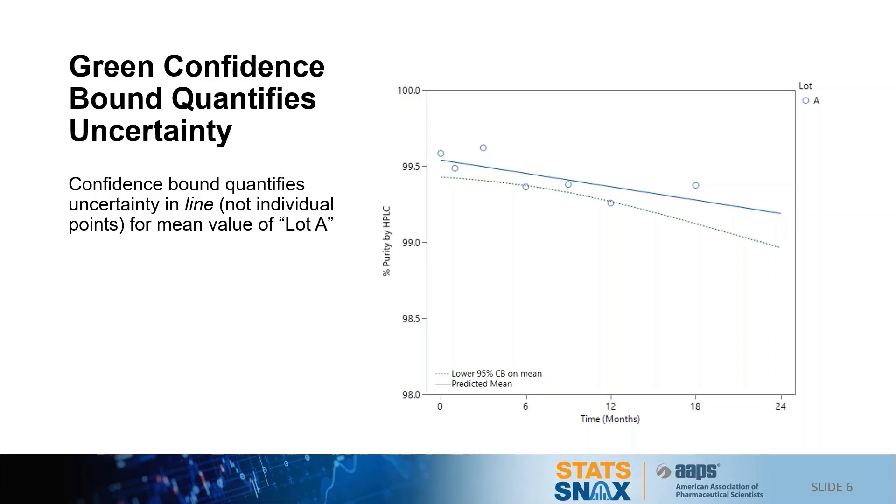So this means that the line can be as extreme as the region shown by the confidence bound. But this also means that the points are expected to fall outside of the confidence bound, especially as the data set grows and the uncertainty decreases.